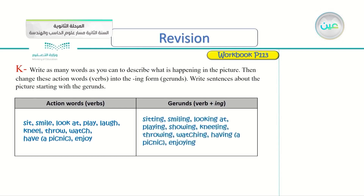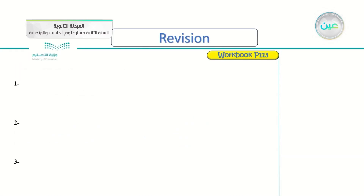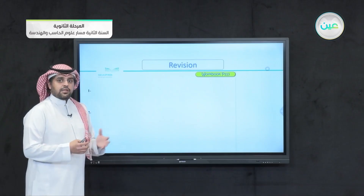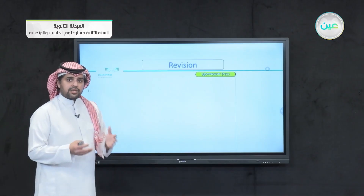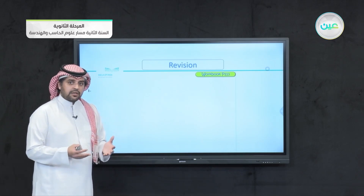Let's see some of the verbs: sit, smile, look at, play, laugh, kneel, throw, watch, have a picnic, enjoy. Now the gerunds — the verb plus -ing: sitting, smiling, looking at, playing, showing, kneeling, throwing, watching, having a picnic, and enjoying. For the second part of the question, write sentences about the picture starting with gerunds. You can write two, three or more — but it's better to write more than three.